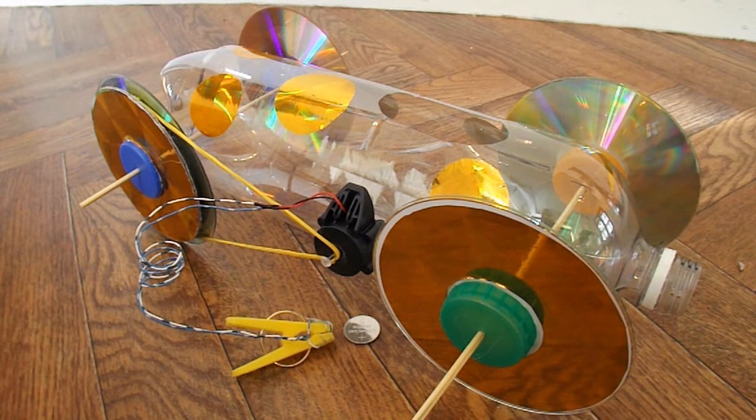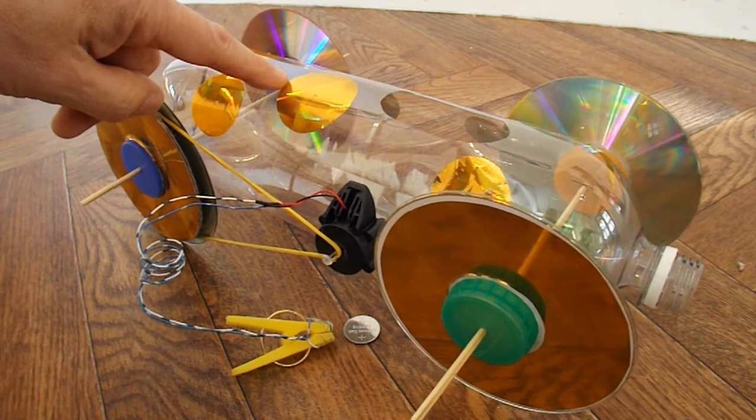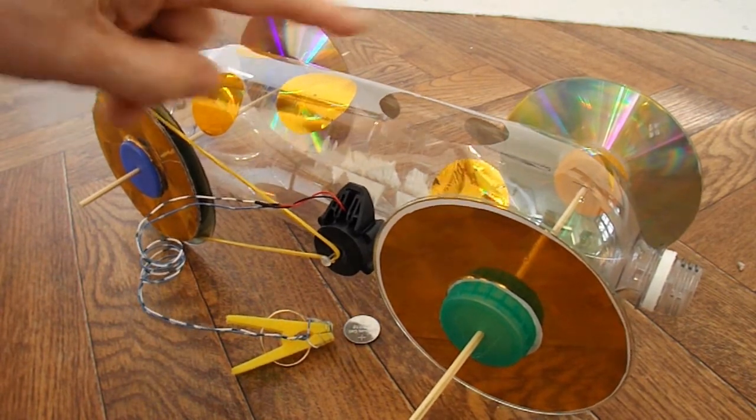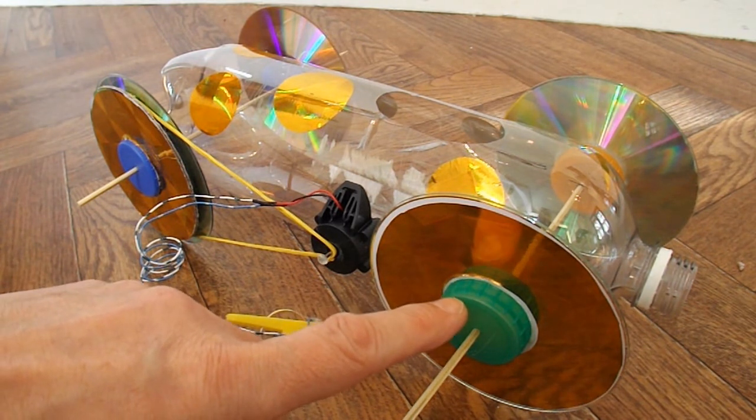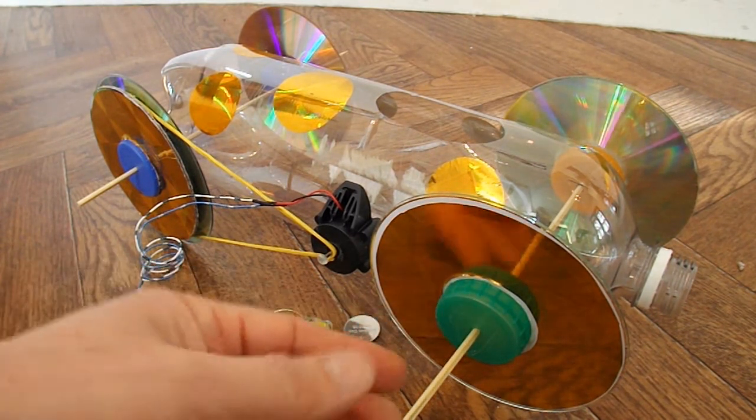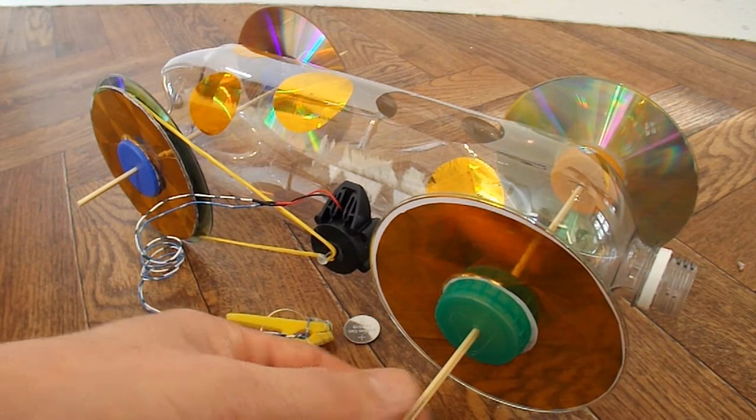Summary time. What have we got? We've got a plastic pop bottle. Got four CDs for wheels. Milk bottle tops for the hubs. Barbecue skewers for the axles.